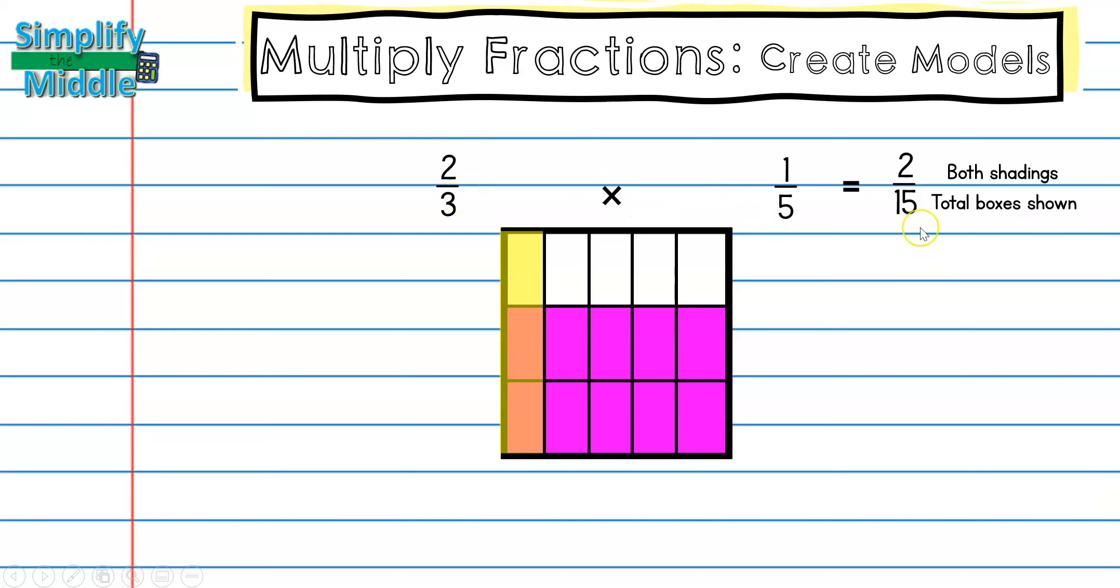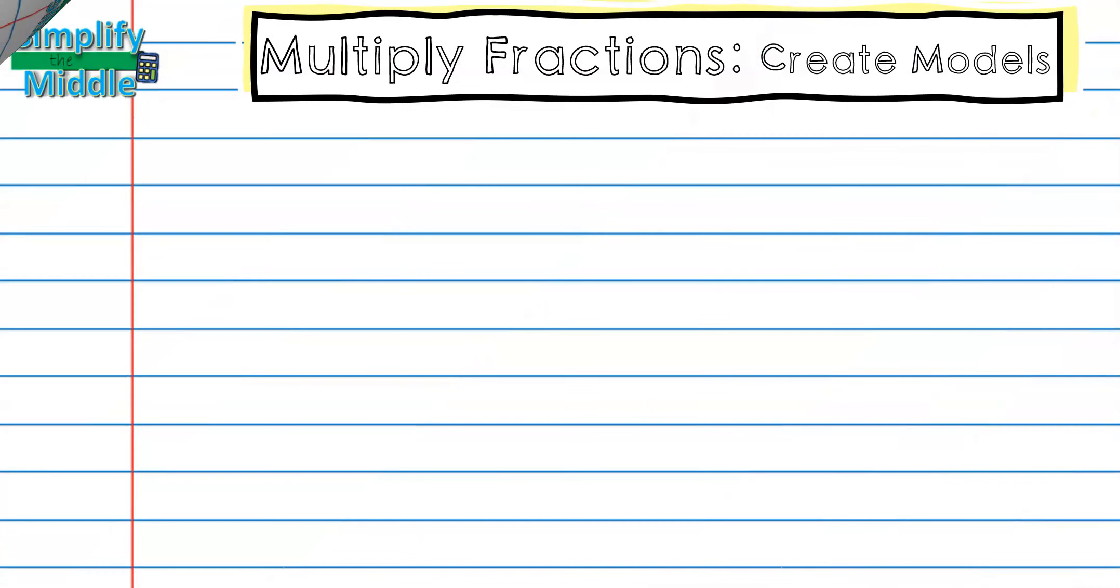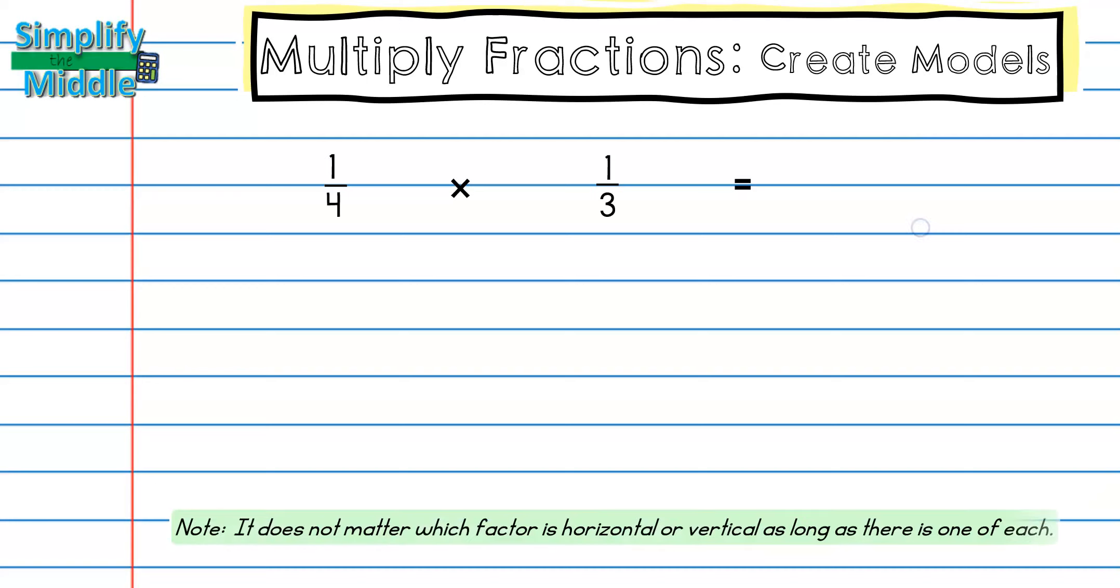Let's try another problem. This time we're going to try to create this problem in a third box. So let's first draw one-fourth. And it's important to note that it doesn't matter which fraction is horizontal or which factor is horizontal or vertical, as long as there's one of each. And remember, a factor is just talking about each one of the pieces that you're multiplying together to get your answer, which is the product.